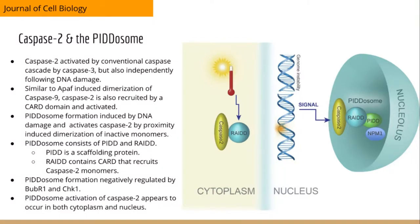Caspase 2 happens to be activated during normal routine apoptosis because it's cleaved alongside the typical caspase cascade following cytochrome C release. But caspase 2 is unique because it's the only caspase found in the nucleus during basal conditions, although caspase 3, which cleaves caspase 2, is shuttled to the nucleus to cause that cleavage. Experiments have tentatively suggested that caspase 2 can be activated following DNA damage independent of mitochondrial status.